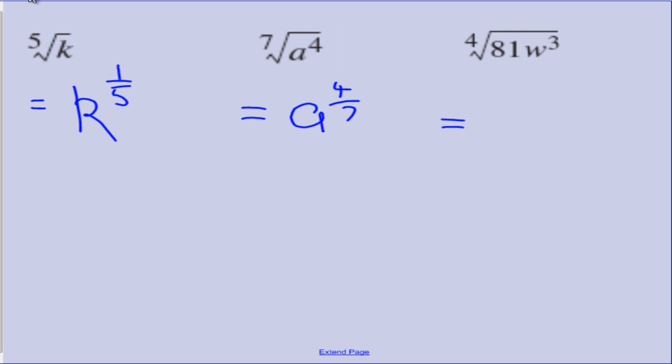In this next example it gets a little more complicated. We have 81 and W cubed under the fourth root sign, so we treat each separately. For 81: its power is 1 (implied), divided by the root sign power of 4, giving 81 to the power of a quarter. For W: it already has a power of 3, divided by 4, giving W to the power of 3 quarters.